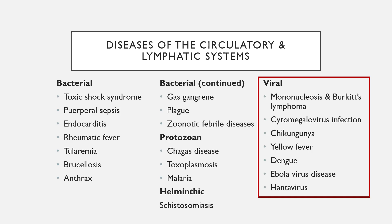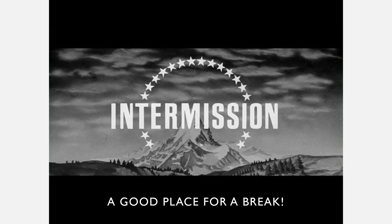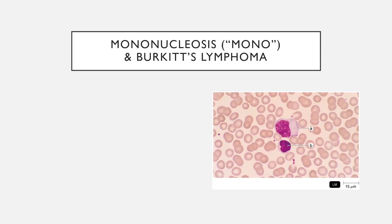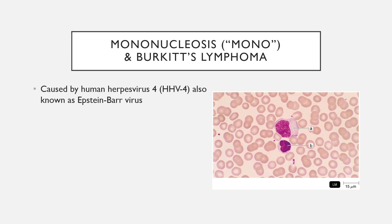This brings us to the end of bacterial infections of the circulatory and lymphatic systems. We're moving on now to viral infections. This is a longer lecture, so this is a good halfway point for a break if needed. The first viral infection is mononucleosis — mono — and its related disease Burkitt's lymphoma. Mono is caused by Human Herpesvirus 4 (HHV-4), also known as the Epstein-Barr virus.